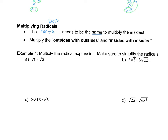When multiplying two roots, they must be the same root. Both of these are square roots, so they can be multiplied. You multiply the insides together: 8 times 3 gives √24. To simplify, decompose 24: 8 is 2×2×2, and I have a pair of 2s that come out, leaving a 2 and a 3 inside. So 2 comes out, and 2 times 3 gives 6 back inside the root. Final answer: 2√6.